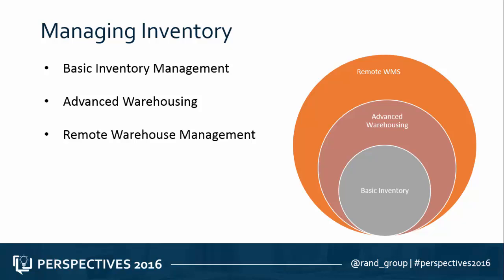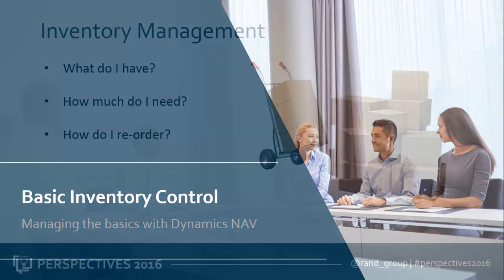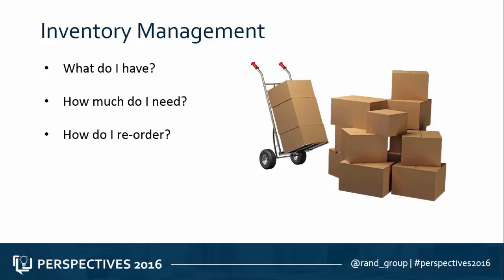Within Dynamics NAV there are really multiple levels of inventory management. The first is basic inventory management, which we see implemented most often amongst our clients. As your business becomes more complicated and your warehousing needs grow, we have a granule in NAV called advanced warehousing. We'll also talk about remote warehouse management, a solution built by Rand Group that can truly help streamline processes within your warehouse. Basic inventory control is really focused around three primary items: What do I have? How much do I need? And how do I reorder it?